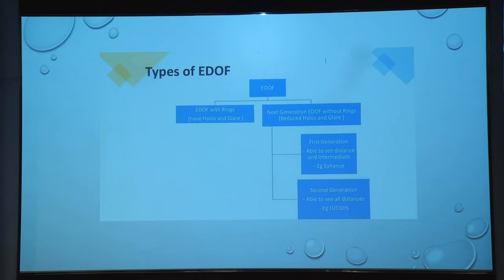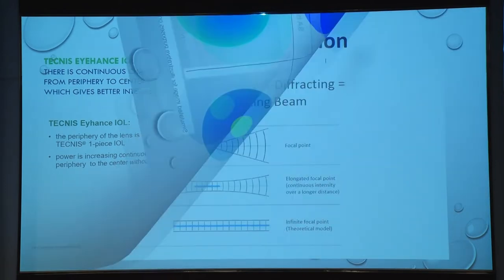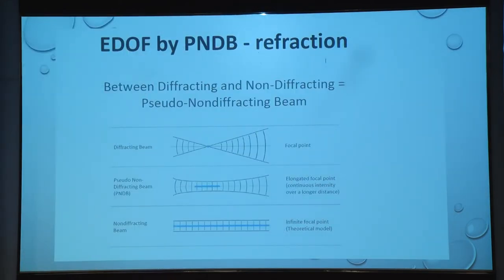The first generation is the Tecnis lens, wherein the peripheral power increases towards the center for near vision. Nowadays more popular is the Lucidis lens, which I frequently use — no financial interest. In the Tecnis there is a continuous change in power from periphery to center, giving better intermediate distance vision. The Lucidis lens works by pseudo non-diffractive beam refraction.